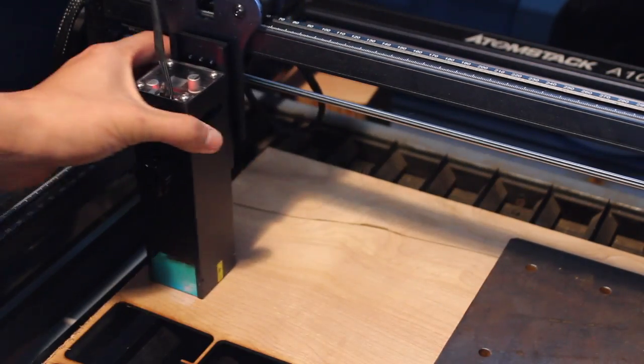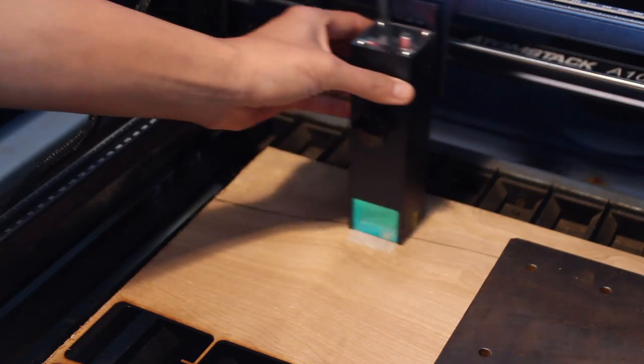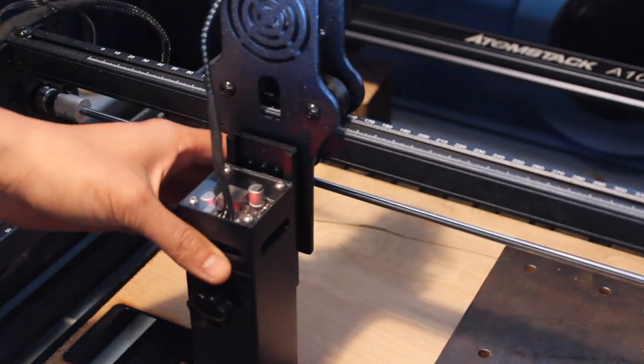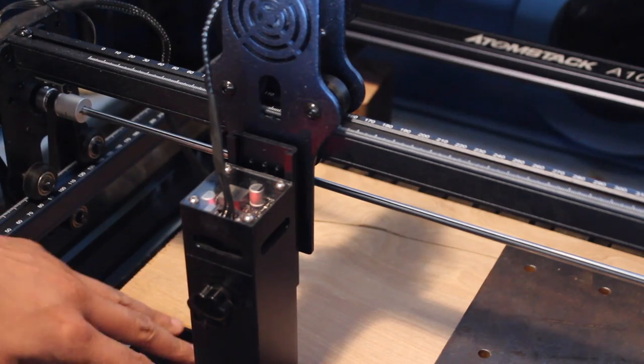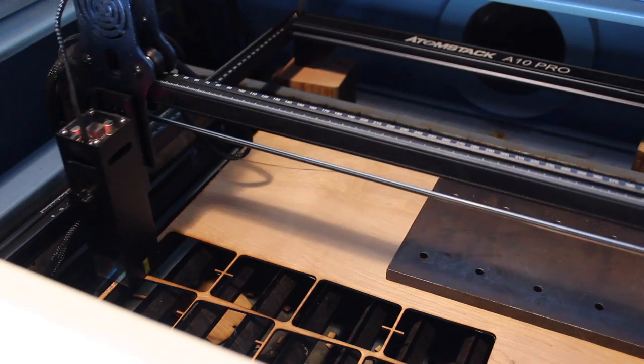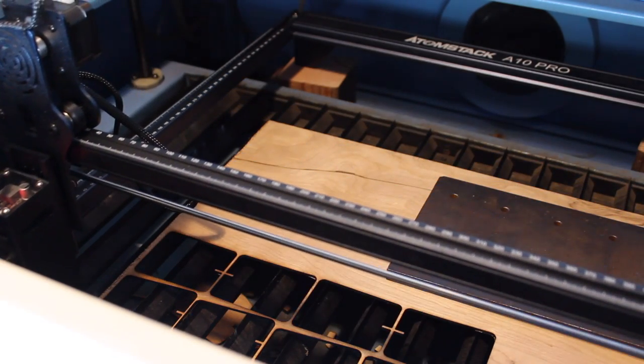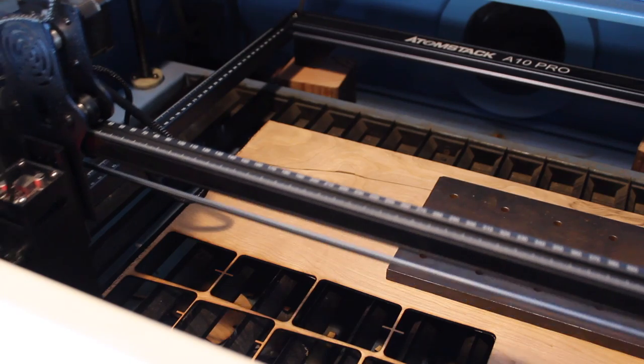This has one big problem though, and that's material flatness. Even with this big steel plate weighing down the two and a half millimeter plywood, it's really common for the laser module to touch the material and risk moving it around during the cut.